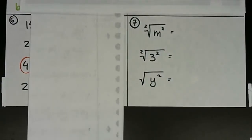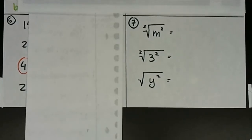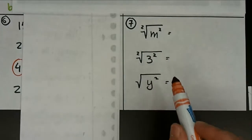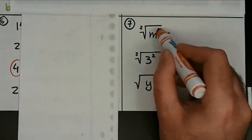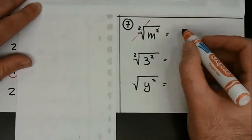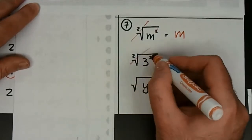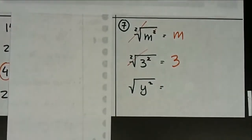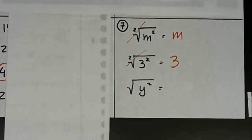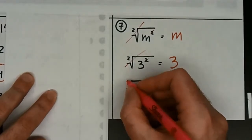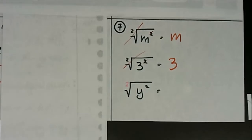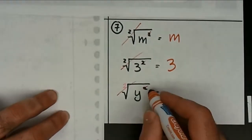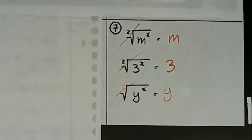Number seven: you're asked to simplify, and these are super simple. If you said m, 3, and y you're absolutely correct. Here the exponent of two and the radical of two cancel each other out, so you're left with just m. Here the radical to the power of two and the exponent of two cancel each other out, leaving you with 3. And for the last one — I didn't write the radical to the power of two, but if there's nothing written in radicals you assume it's automatically the second power — so it cancels out with the exponent of two to get us just y.